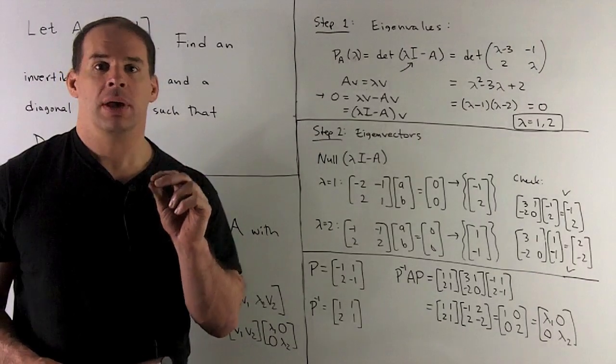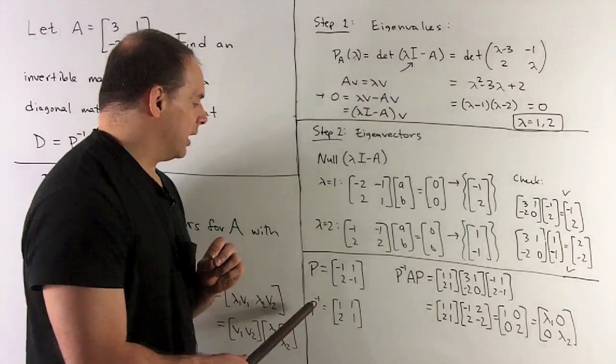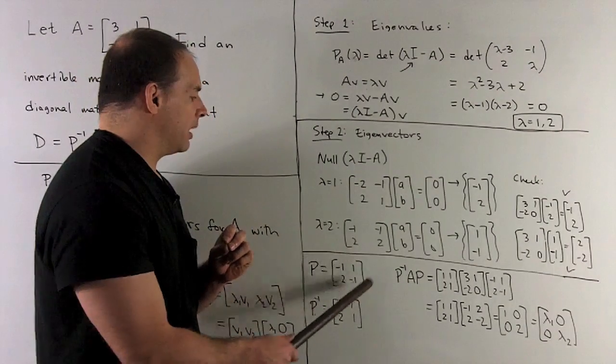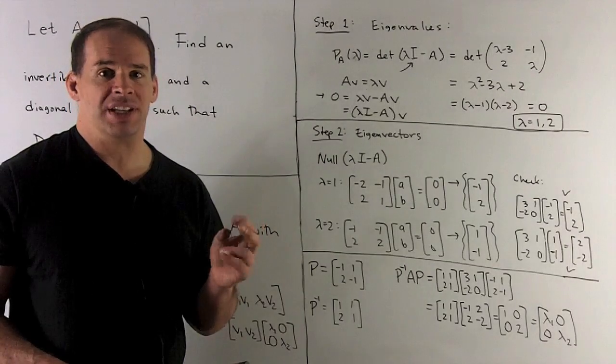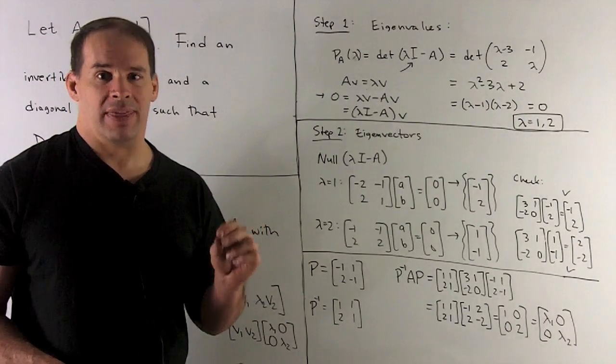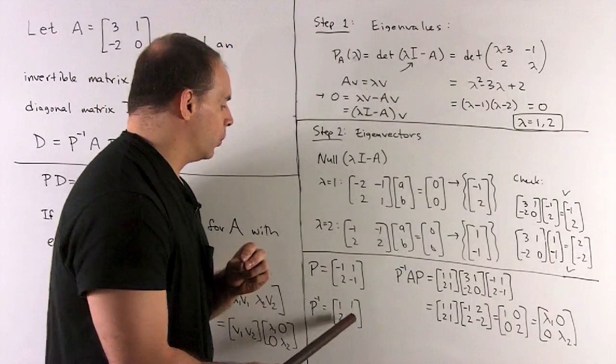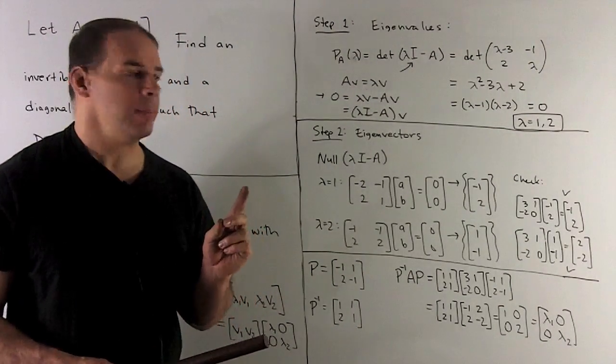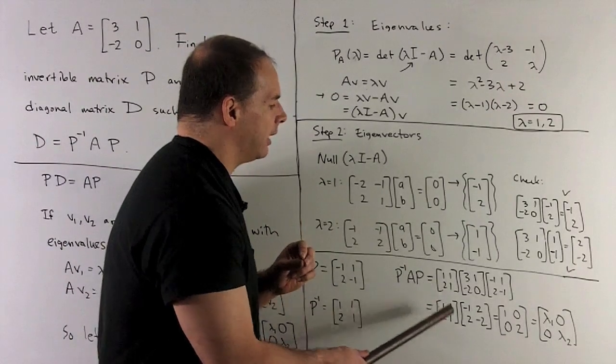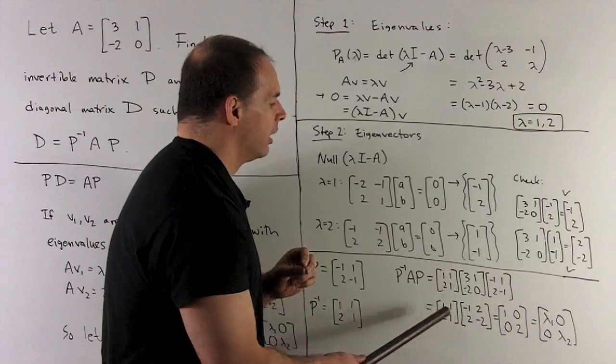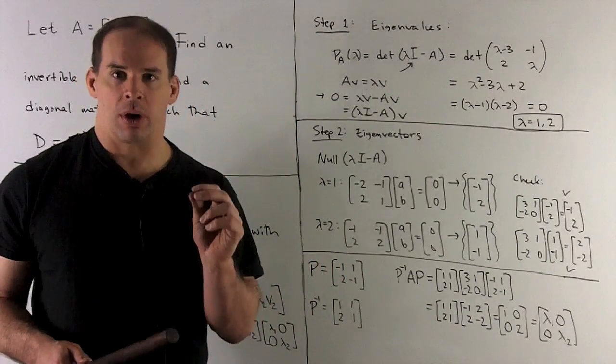Let's compute P inverse and then see that our diagonal matrix comes out. P inverse, what do we do? Determinant here is minus one. To get our inverse, flip the diagonal entries, negate off the diagonal, and then divide by the determinant. That gives me one, one, two, one. We set up P inverse AP. I'm going to start by doing A times P. I get this matrix here. And then we take it all the way, and that gives me my diagonal matrix, one, two, as promised.